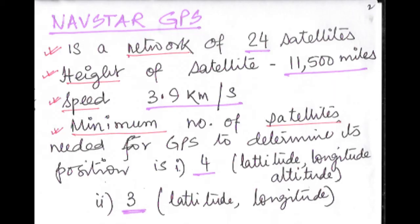The GPS was developed by the US DOD and they developed the NAVSTAR GPS. It is a network of 24 satellites. The height of the satellites is 11,500 miles — please remember the unit. And the speed of a satellite is 3.9 kilometers per second, meaning in one second it travels approximately 3.9 kilometers.